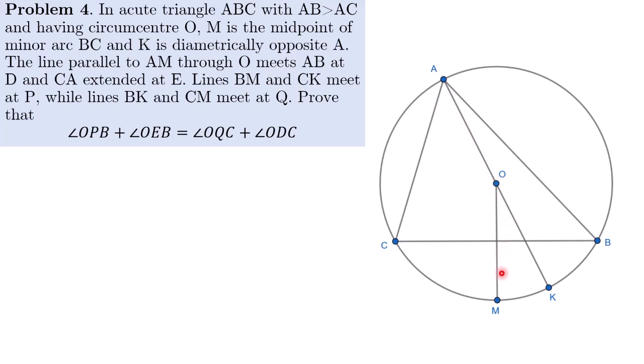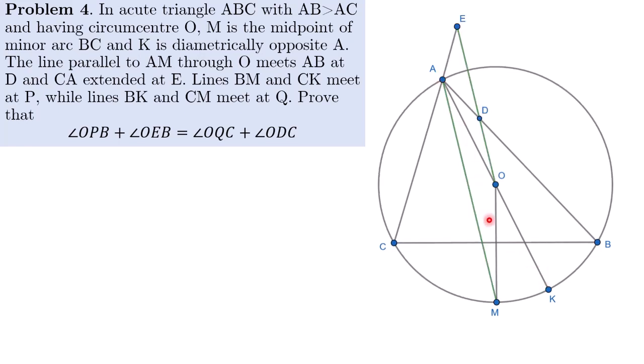M is the midpoint of the minor arc BC and AK is the diameter. The line parallel to AM that passes through O meets AB at D and meets CA extended at E.